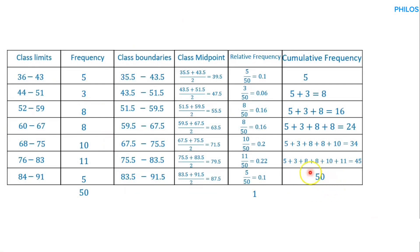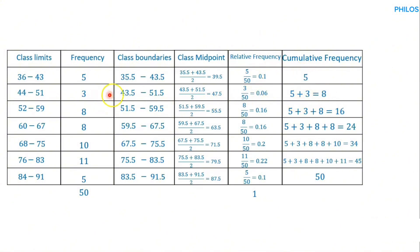The cumulative frequency of the last class must equal the total frequency. If they don't match, you've made a mistake. Another method: the cumulative frequency of the first class equals its own frequency. To get the second class cumulative frequency, take the cumulative frequency of the first class plus the frequency of the second class. For the third class, take the previous cumulative (8) and add the current frequency (8) to still get 16.